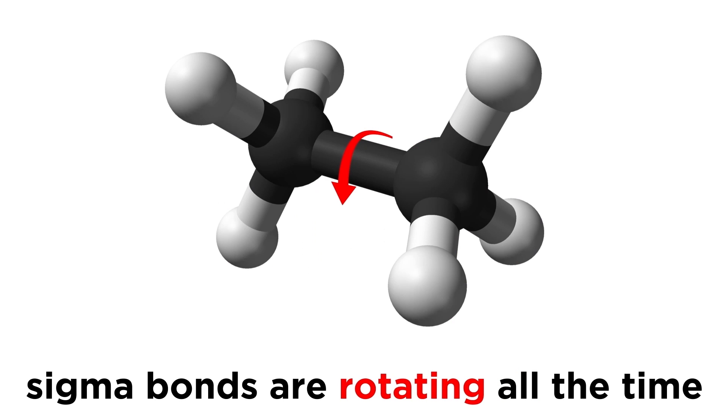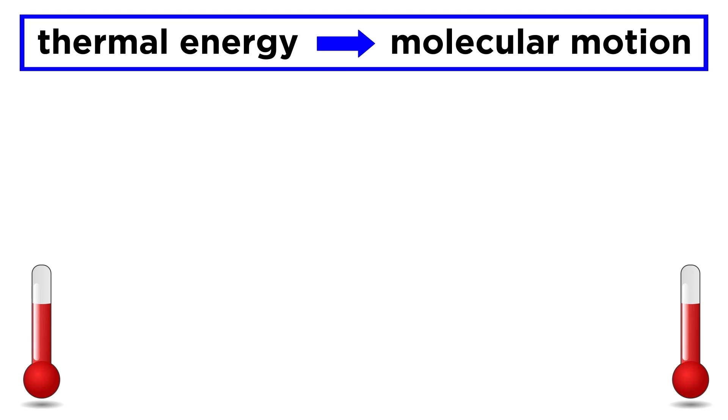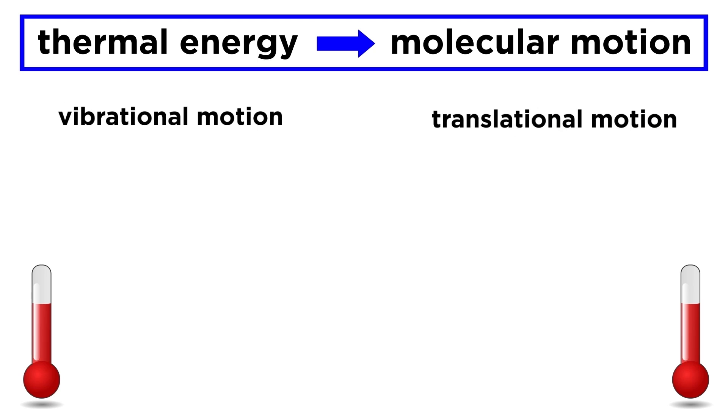Zooming out, what this means for an entire molecule is that every single sigma bond is rotating all the time. Ambient thermal energy is converted into molecular motion, which can be vibrational, translational, or rotational.